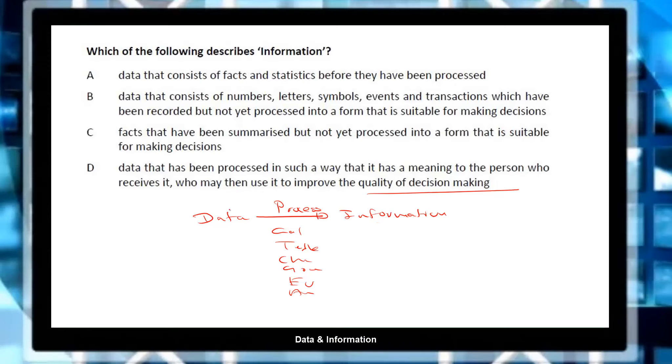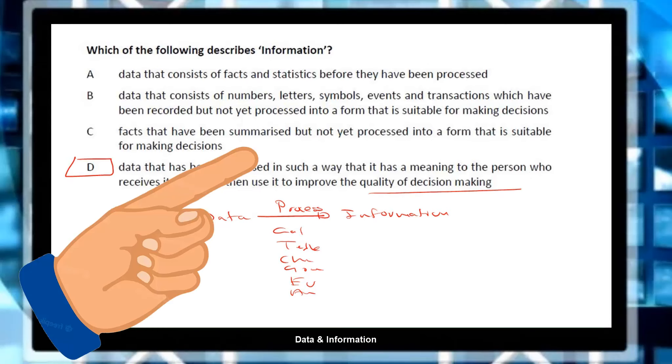So in order to take good decisions, you need good information. So how can you get that information? By processing the data. So the correct answer for this particular question, it should be D. Now you can click the pointed video to try more questions.